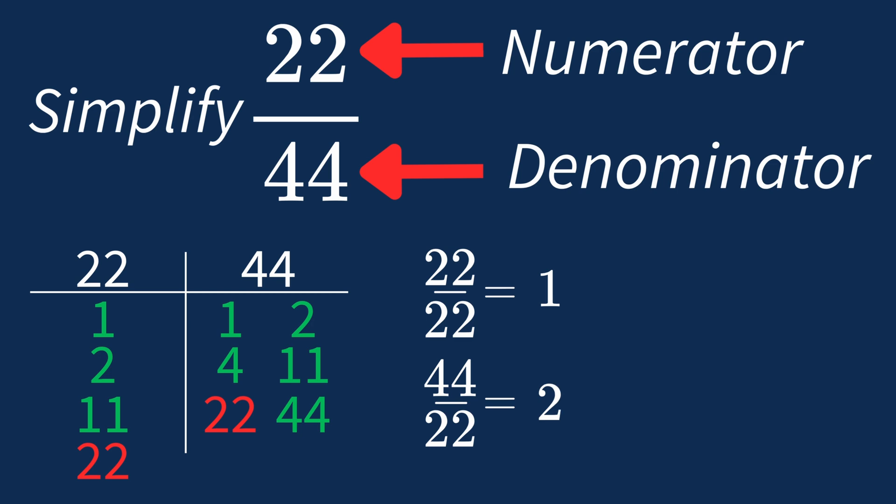So after dividing, the simplified fraction is 1 over 2. And we know that 1 over 2 is in its simplest form, because the only common factor between 1 and 2 is 1. And when 1 is the largest common factor, we know that our fraction has been simplified.